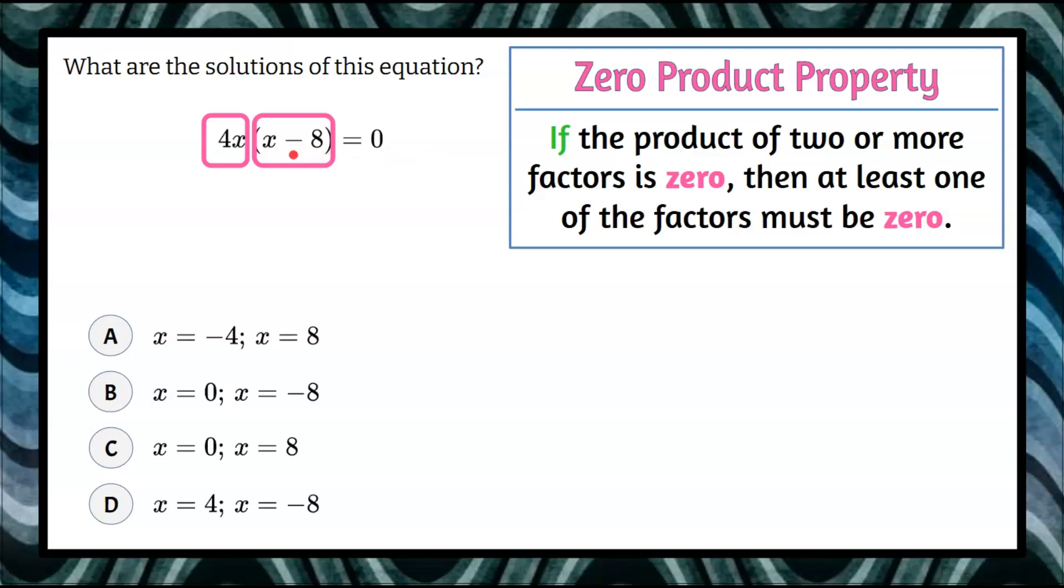We're going to write two equations. We'll take the first factor, 4x, and set it equal to 0. The second factor, x minus 8, also equals 0. Now we solve these two simple equations to find our possible solutions.